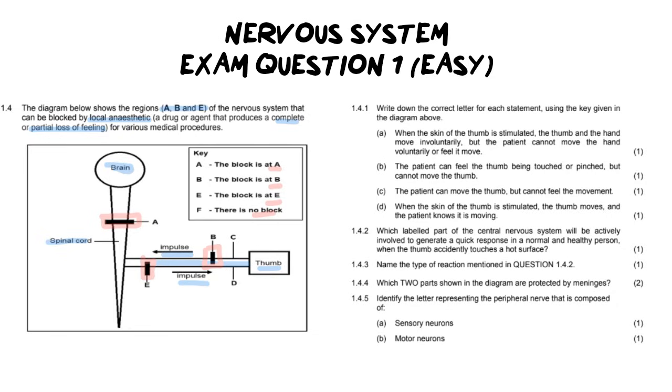For 1.4.1, write down the correct letter for each statement using the key given in the diagram. So they've given us the key over here. The first question says when the skin of the thumb is stimulated, the thumb and the hand move involuntarily but the patient cannot move the hand voluntarily or feel it to move it. So if we break that down, they are saying that the thumb is stimulated, the thumb and the hand move involuntarily, but the patient cannot move the hand voluntarily or feel it move.